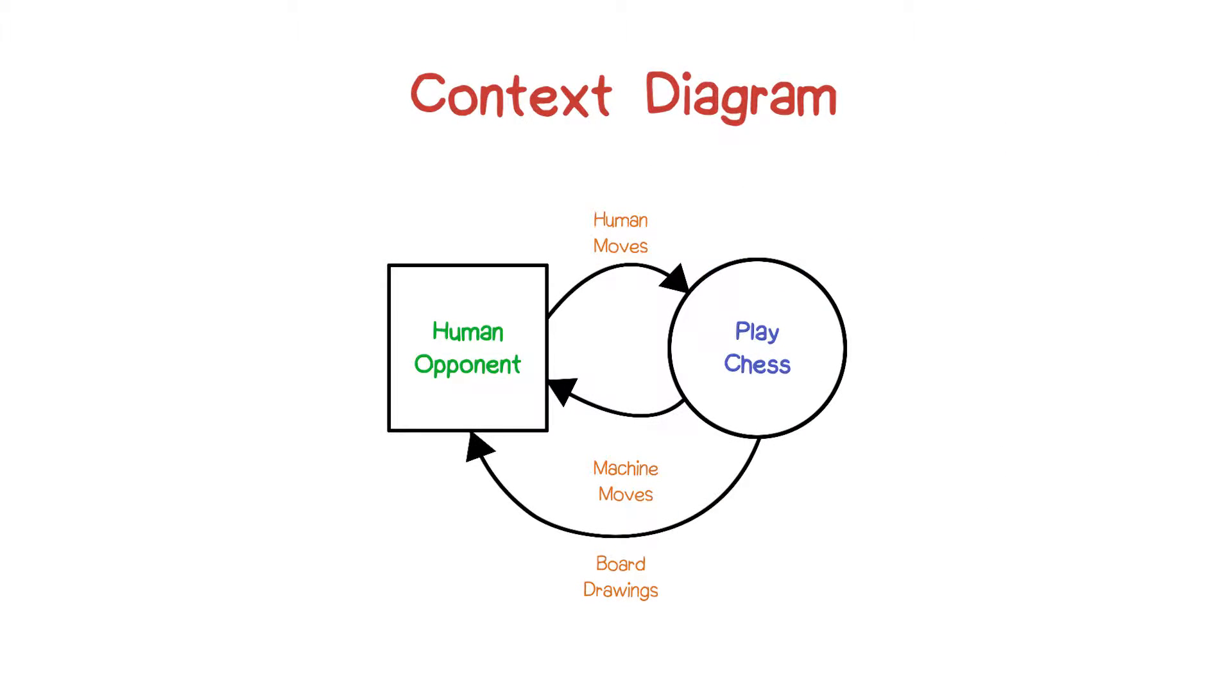Here's a context diagram of a system that plays chess. The external actor is the human opponent, and there are three flows of data.